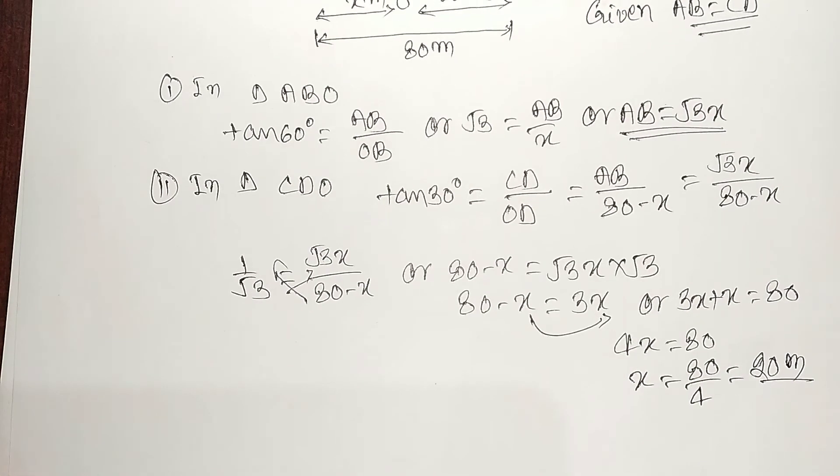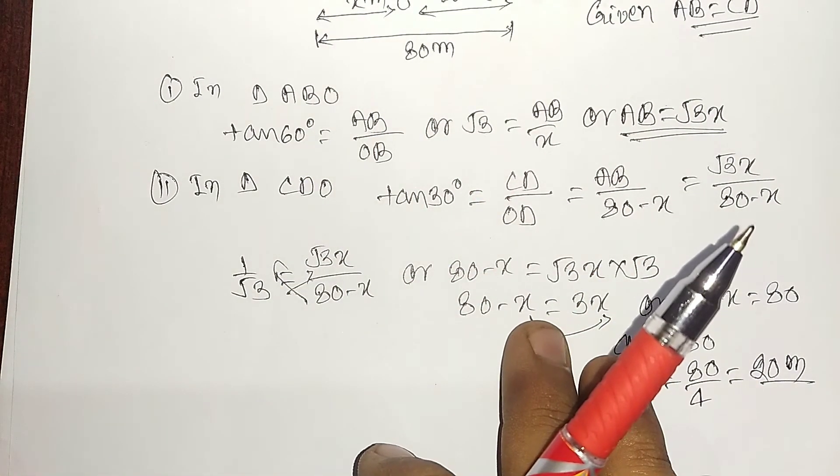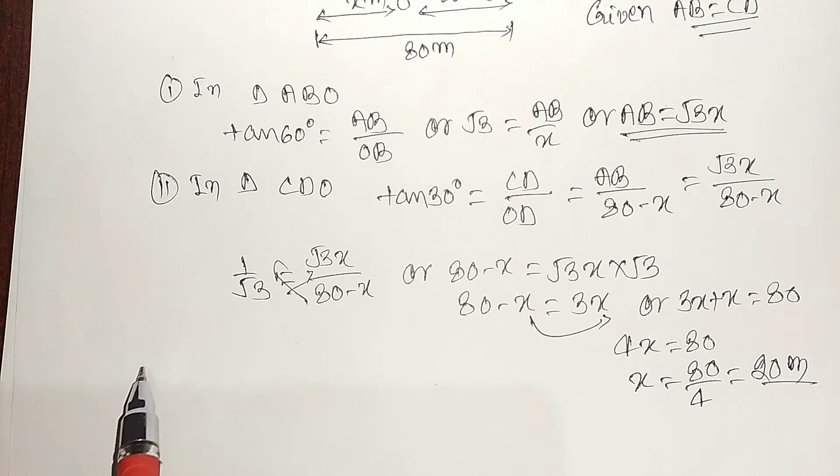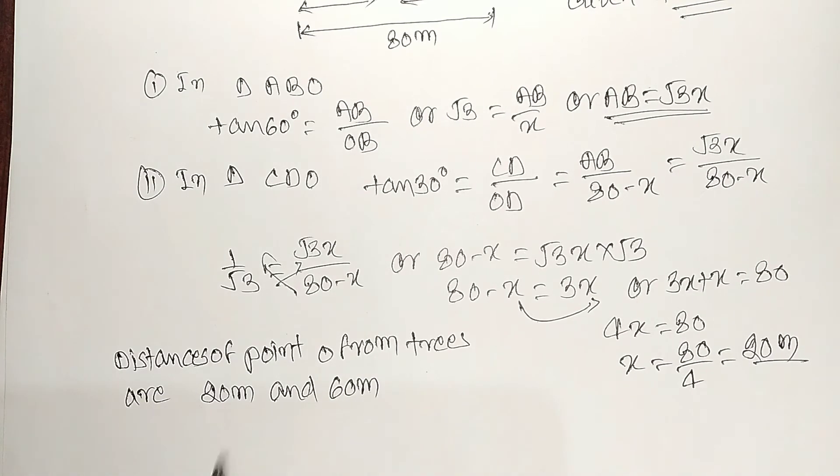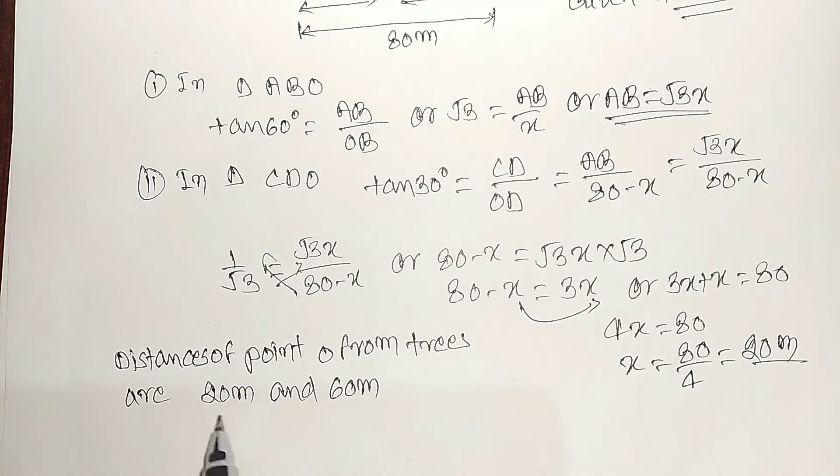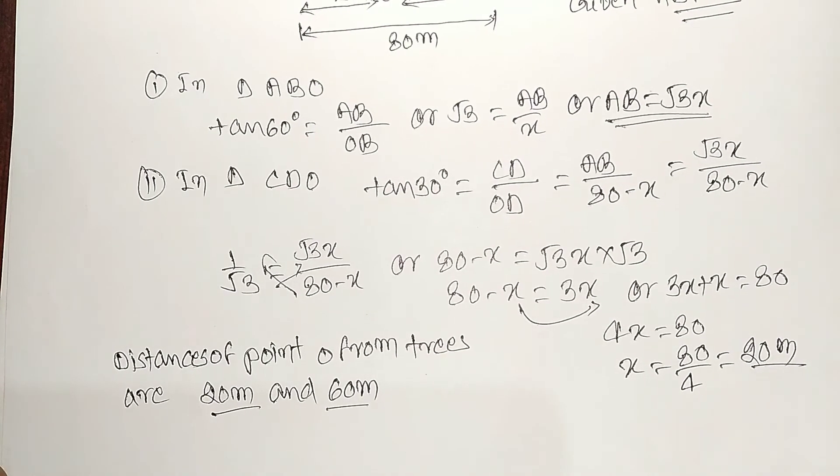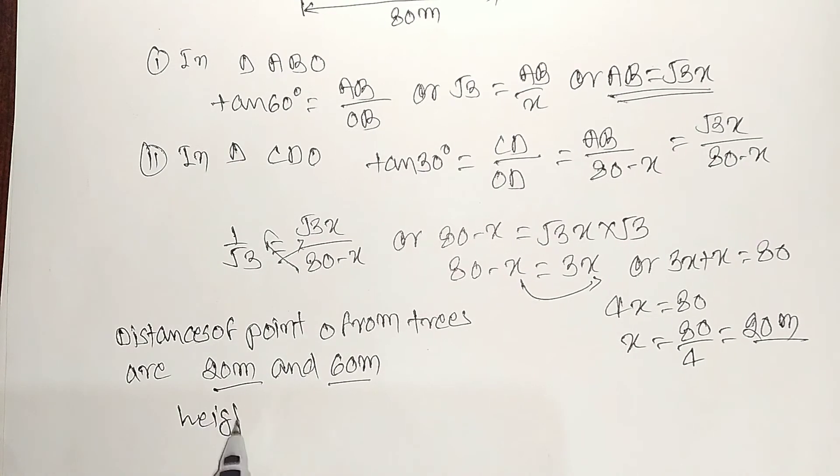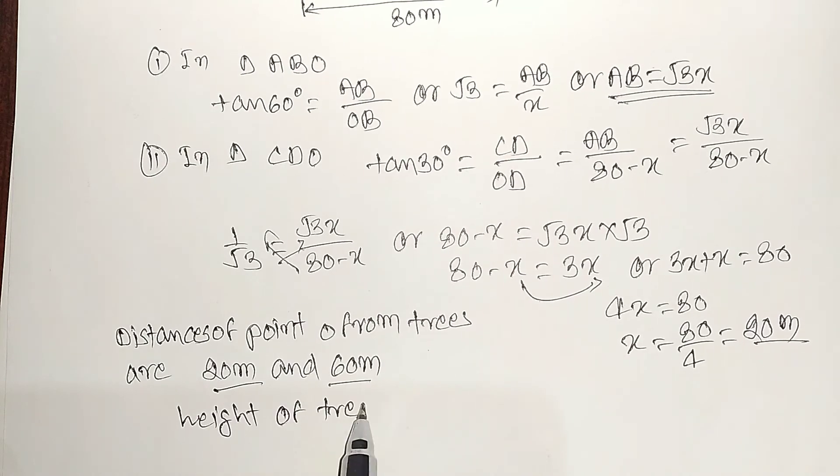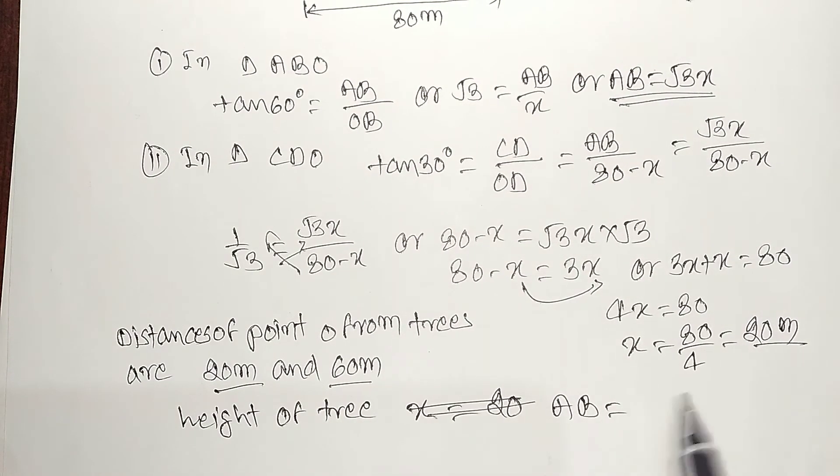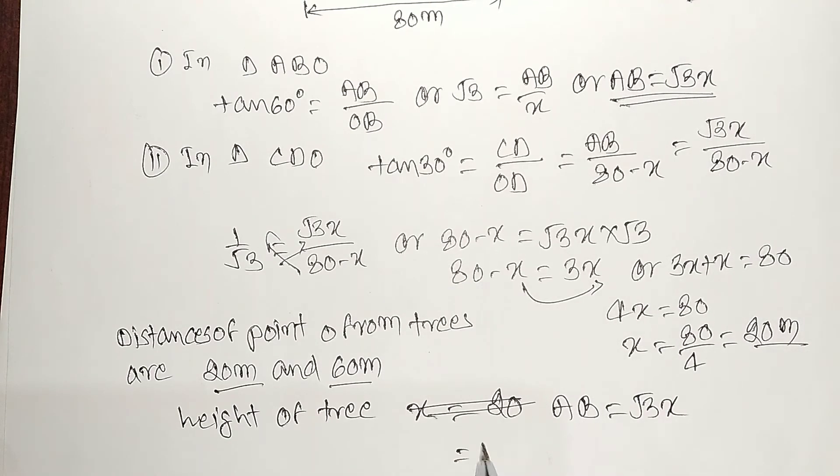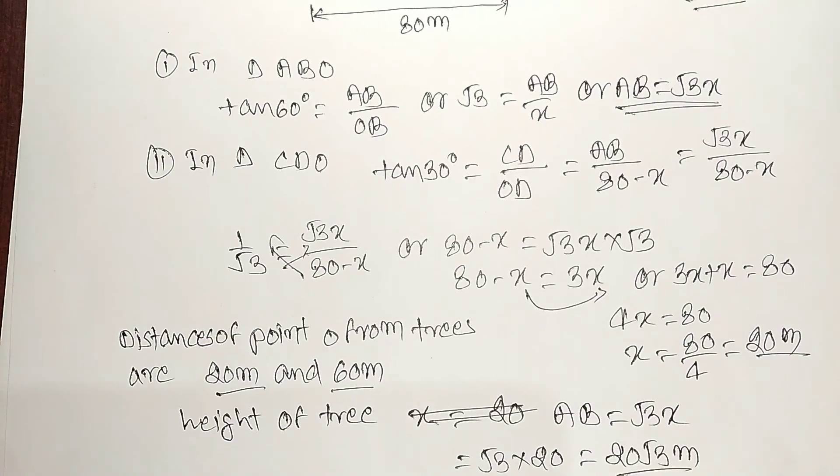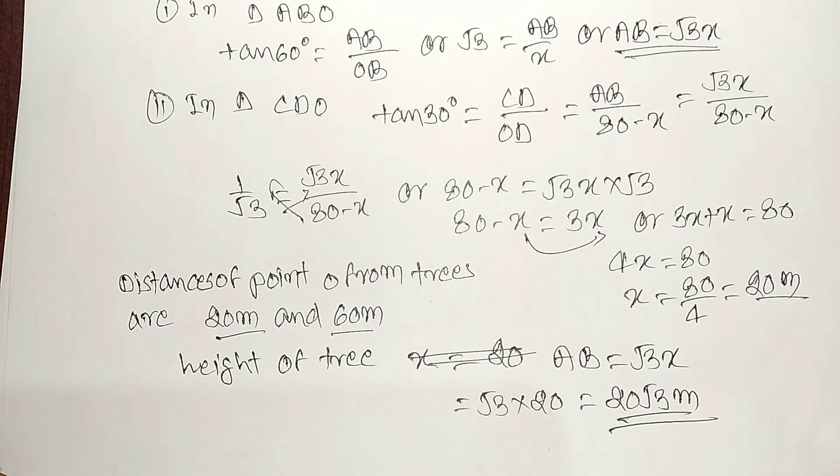So we got one answer. The question asks to find out the distance of point O from the trees. Point O's distance from trees will be 20 meters and 60 meters respectively, one side 20 meters, other side 60 meters. Now the second part asks for height of the tree. AB equal to under root 3x, so under root 3 into 20. The height of the tree is 20 under root 3 meters.